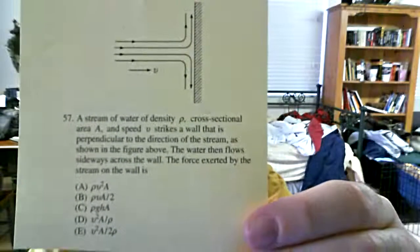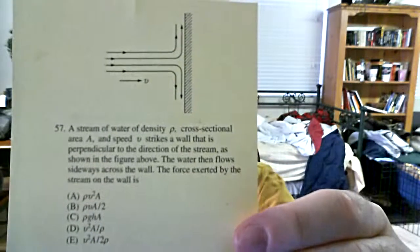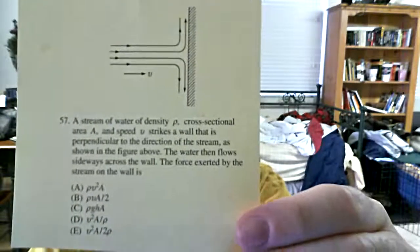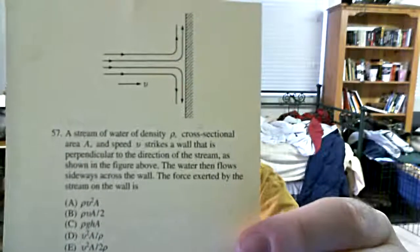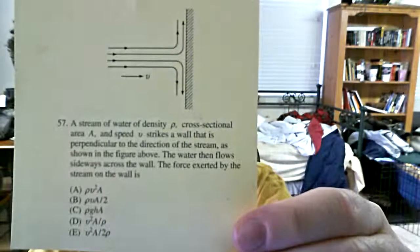A stream of water of density ρ, cross-sectional area A, and speed v strikes a wall that is perpendicular to the direction of the stream as shown in the figure above. The water then flows sideways across the wall. The force exerted by the stream on the wall is...